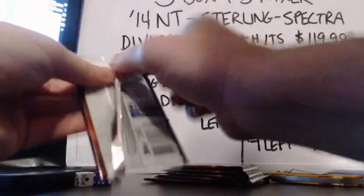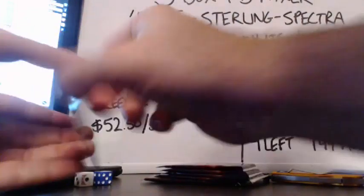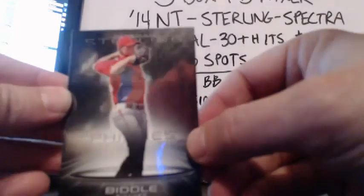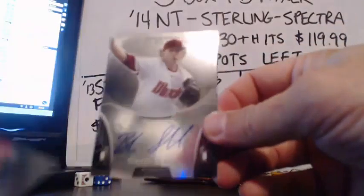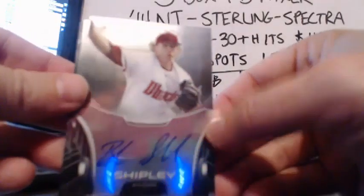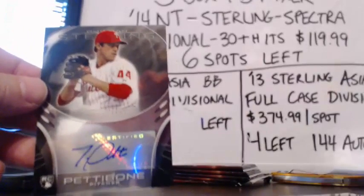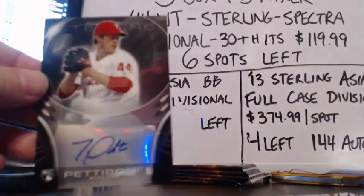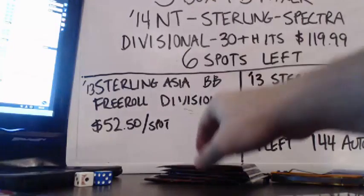There we go. Alright, first pack — we start out with Jesse Biddle for the Phillies. Brandon Shipley for the D-backs. Aaron Blair for the D-backs. And Jonathan Pettibone for the Phillies.